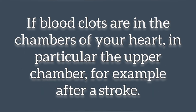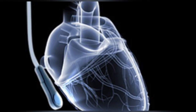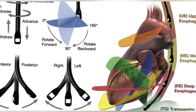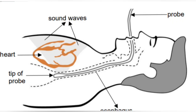TEE can also reveal if blood clots are present in the chambers of the heart, particularly the upper chambers — for example, after a stroke. TEE is often used to provide information during surgery to repair heart valves, a tear in the aorta, or congenital heart lesions. It is also used during surgical treatment for endocarditis, a bacterial infection of the inner lining of the heart and valves.